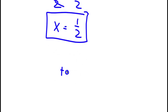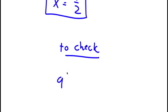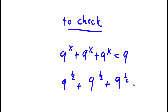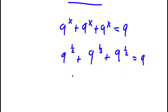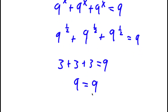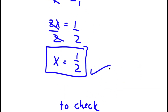Now to check: 9 to the power of x plus 9 to the power of x plus 9 to the power of x equals 9, with x equal to one half. So I have 9 to the power of one half plus 9 to the power of one half plus 9 to the power of one half equals 9. Since 9 to the power of one half is 3, I have 3 plus 3 plus 3 equals 9, which is correct. My solution is right.